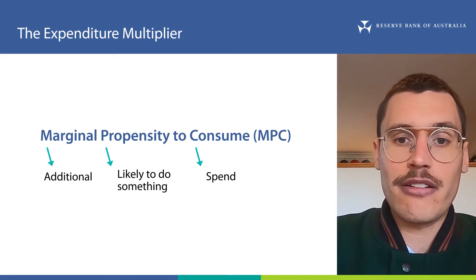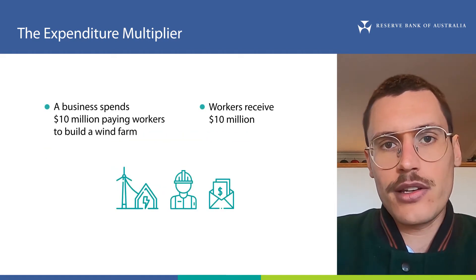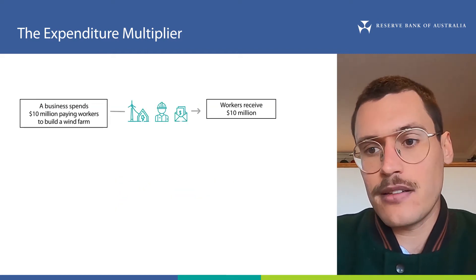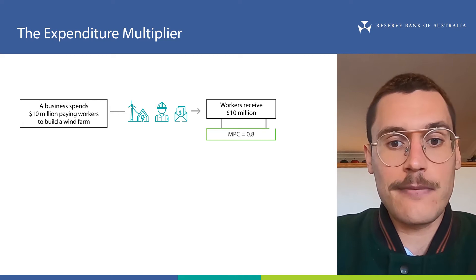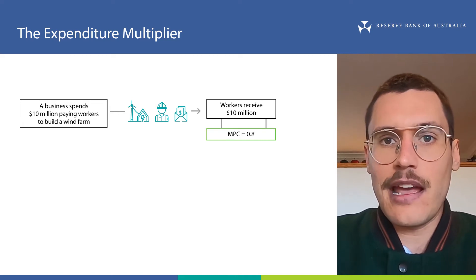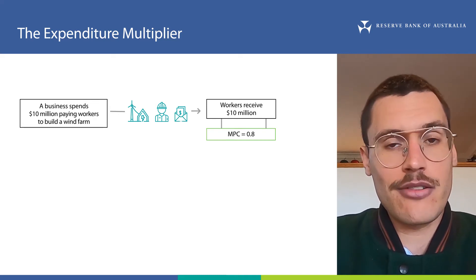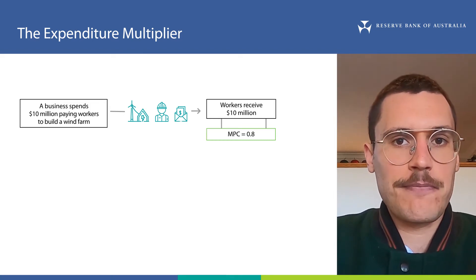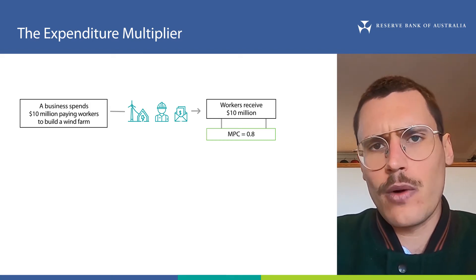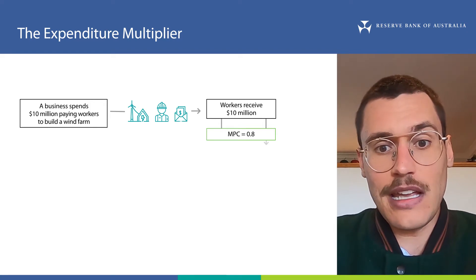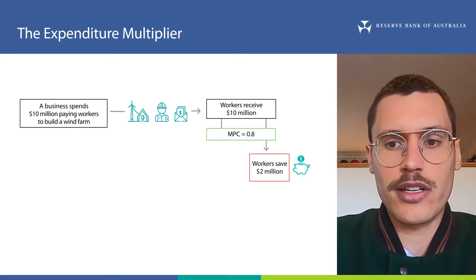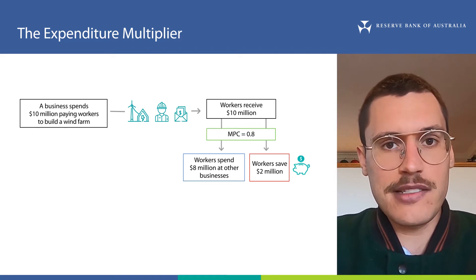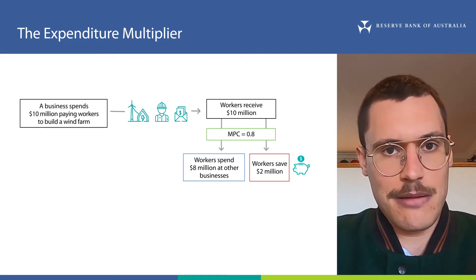Turning back to our example, if our workers spend eight million dollars of their wages and save two million, their MPC would be 0.8. That's the money spent — eight million — divided by the total money received — 10 million. So that's the first step. We now have two million dollars of savings sitting in the bank accounts of the workers, and eight million dollars in the cash registers of the businesses where the wind farm workers spent their money.